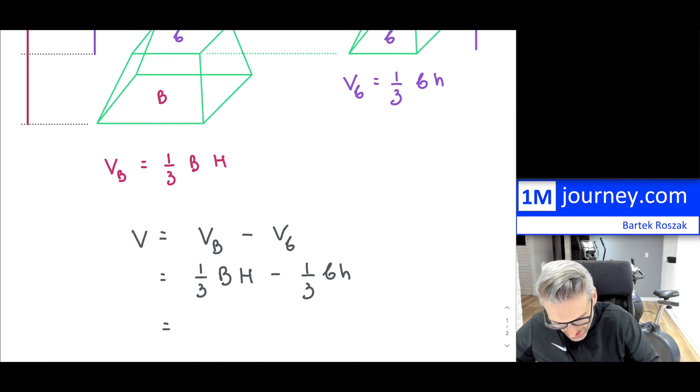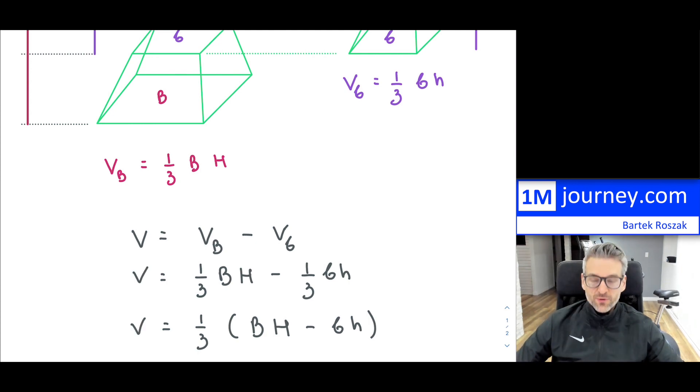And you can clearly take out that one-third, so you can factor that out. And what you're going to have is you're going to have big base times H, minus the base of the small one times h. So this is the volume of the frustum. So this is what you would have in here.